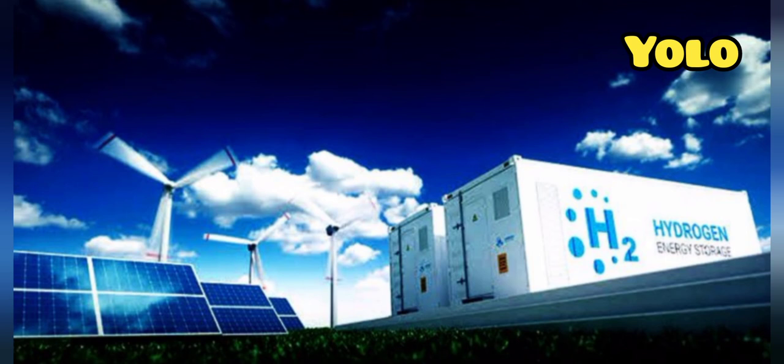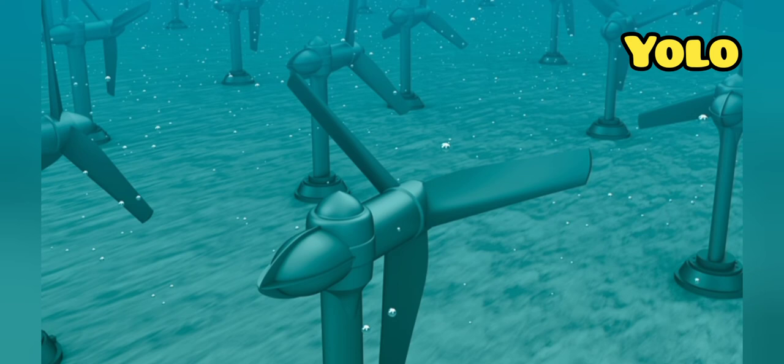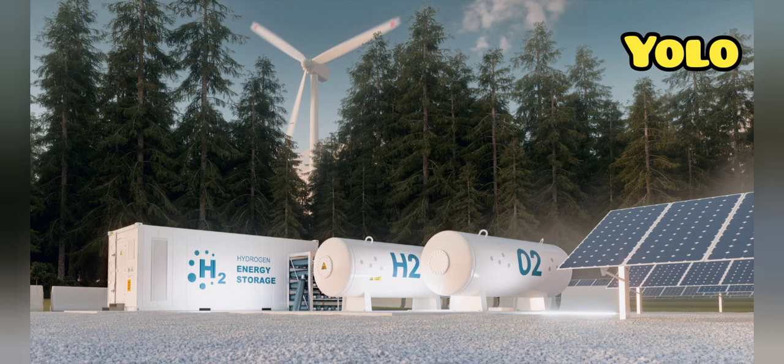Tidal power was installed in the narrows of Strangford Lough in Northern Ireland, UK. The 1.2-megawatt underwater tidal electricity generator takes advantage of fast tidal flow in the lough, which can be up to 4 meters per second. Hydrogen energy is useful for energy storage and for use in airplanes and ships.